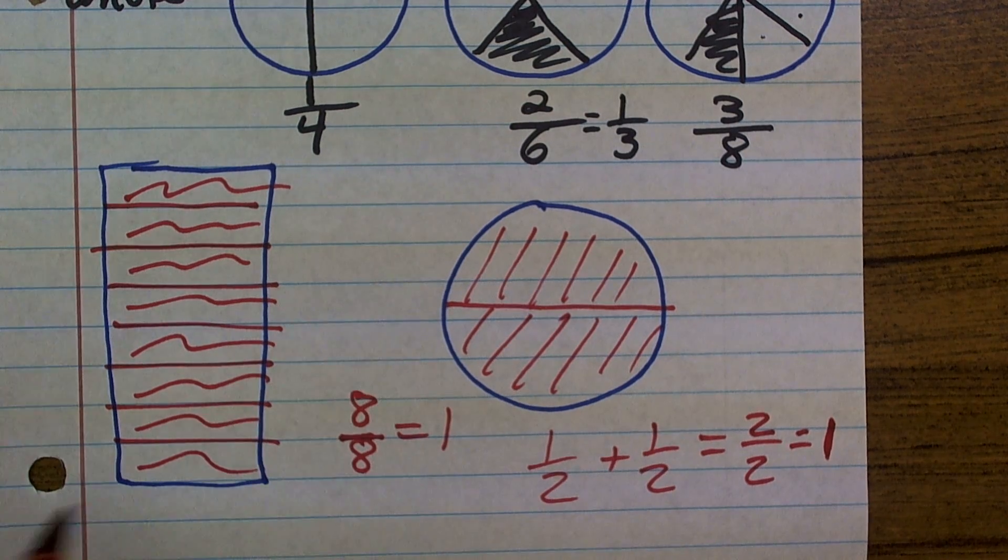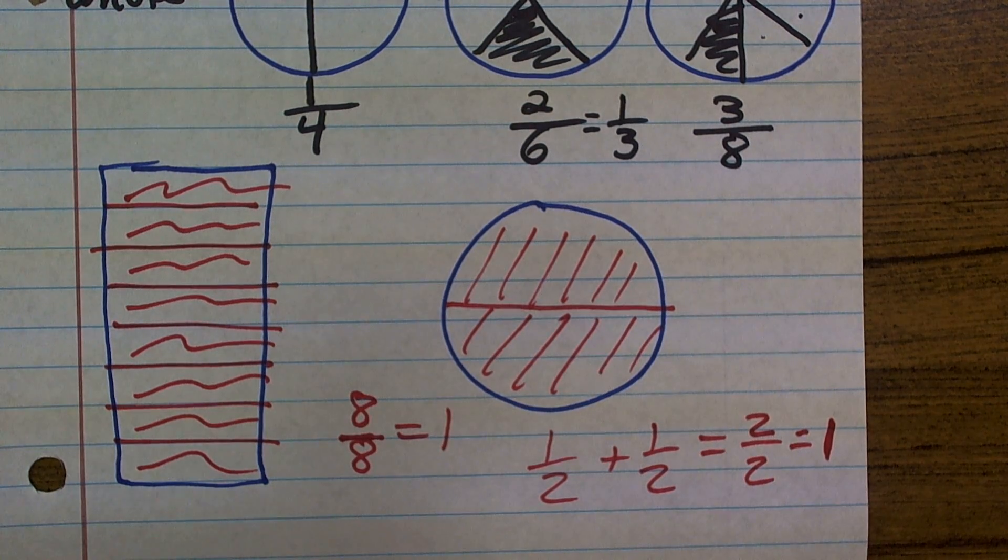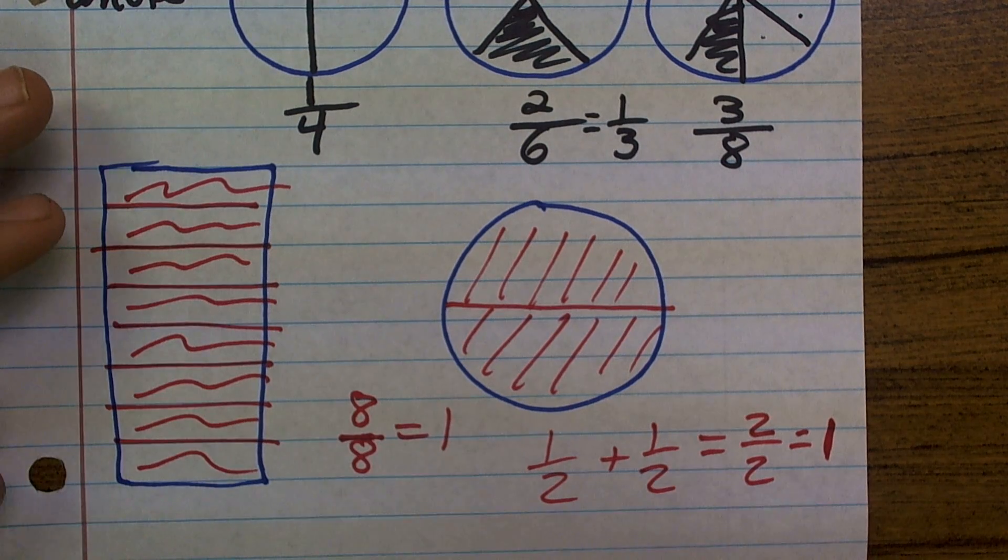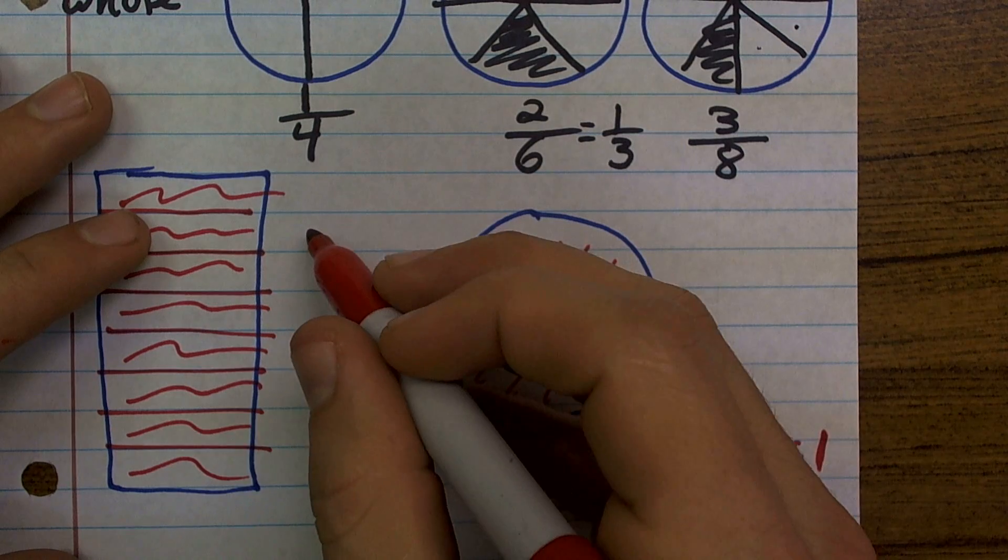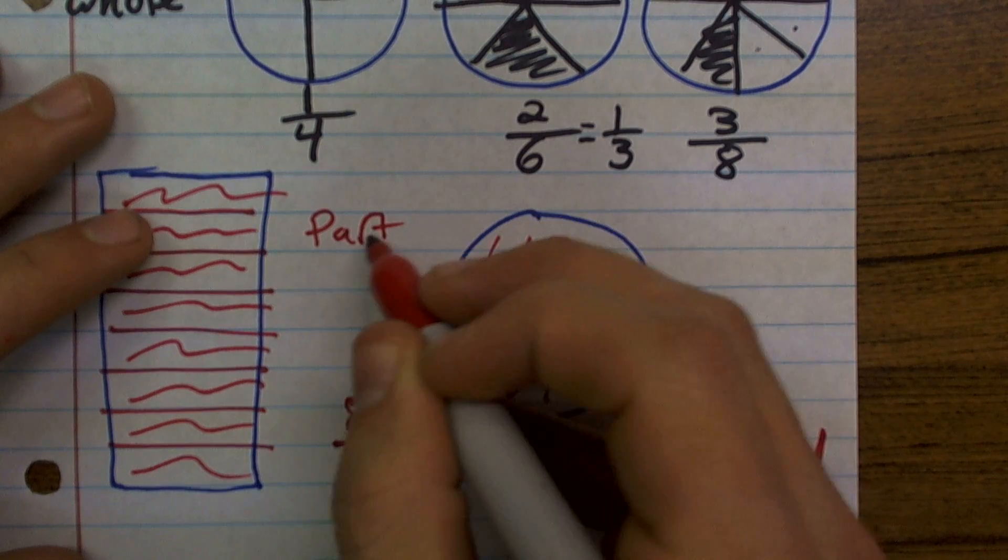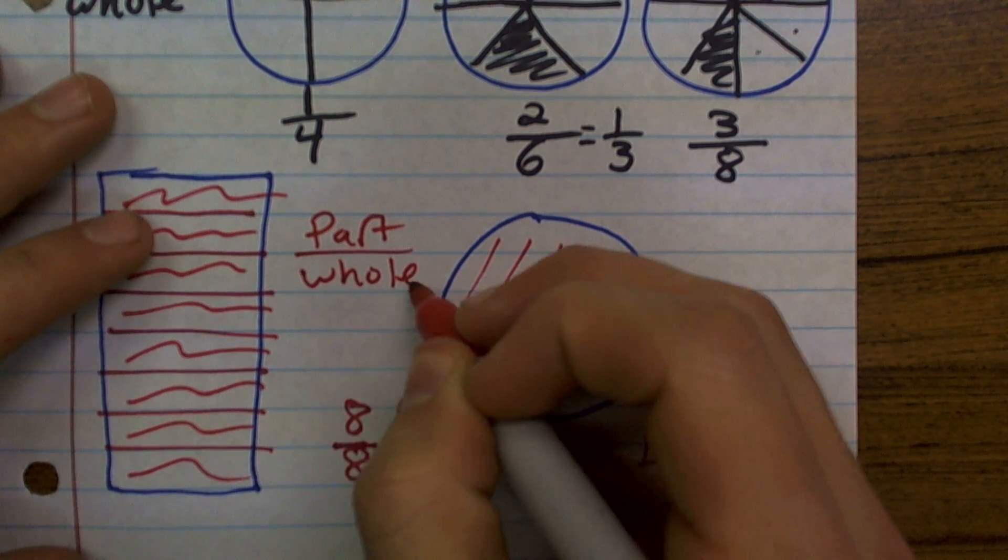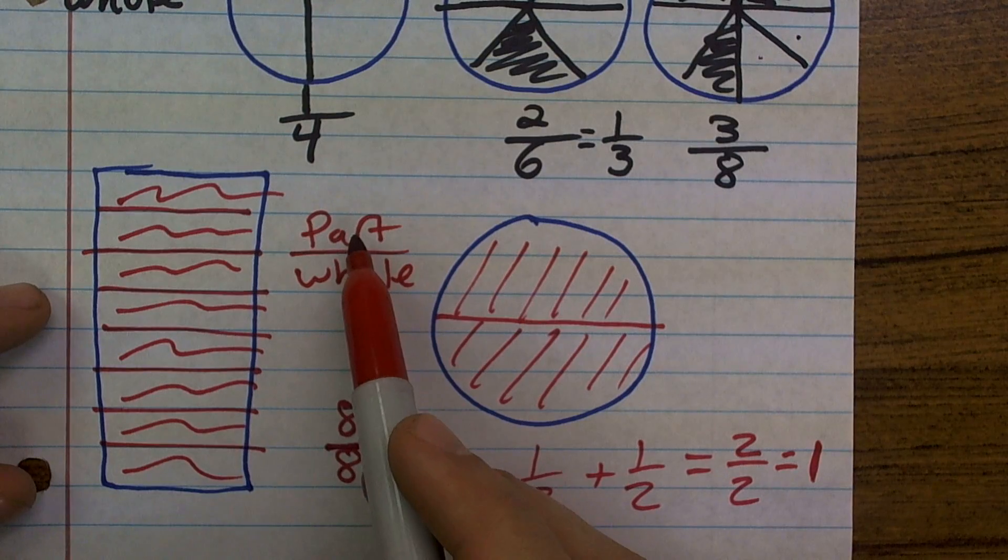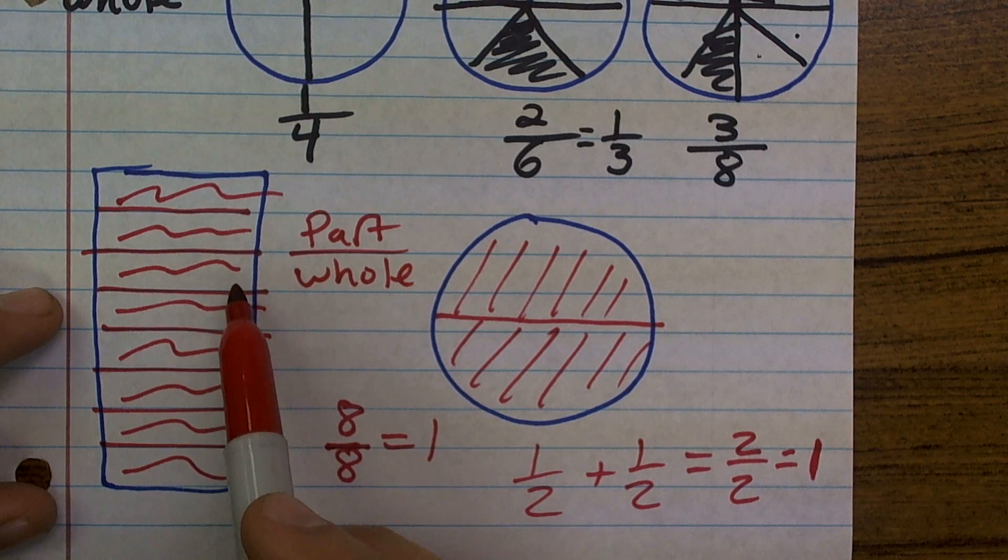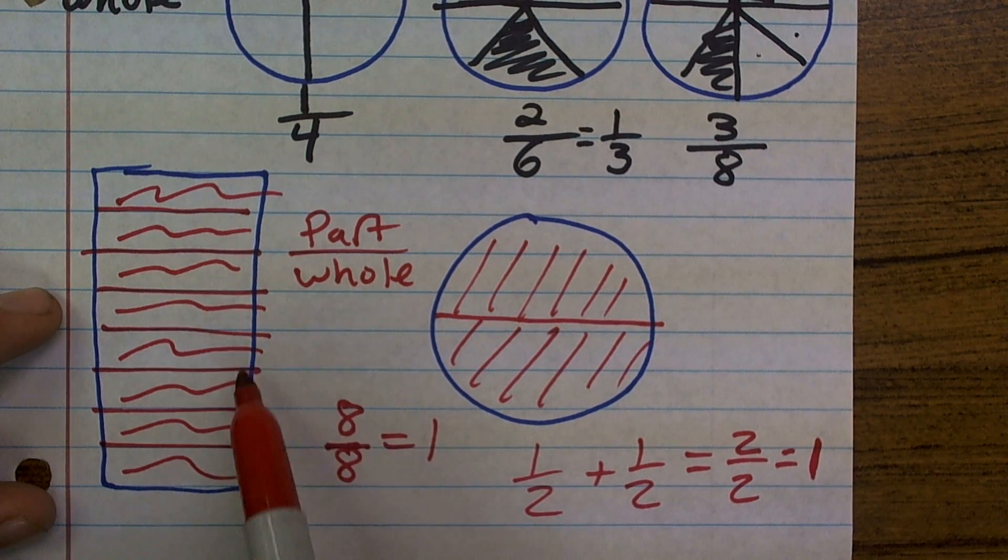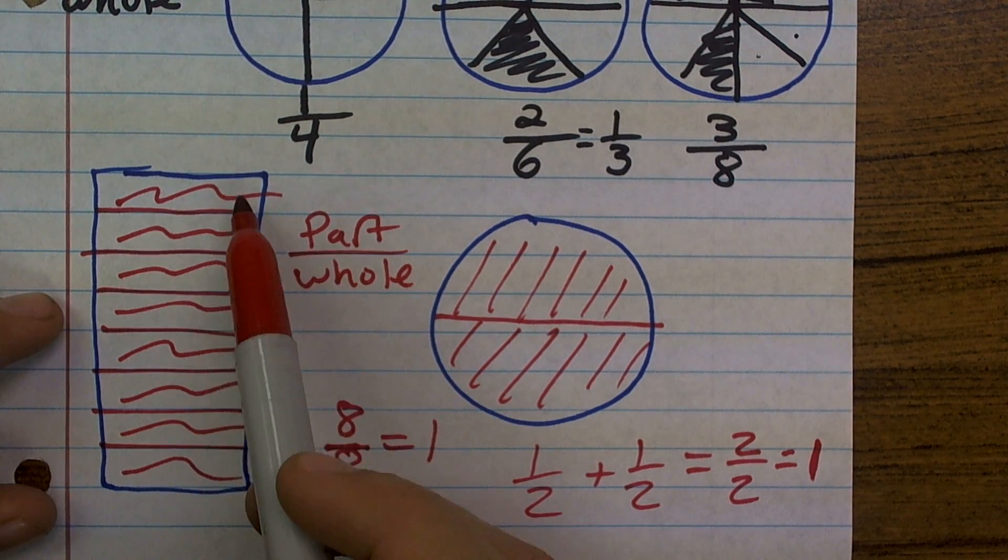So it doesn't really matter if we're dealing with circles or rectangles or really anything that's going to be evenly divided. But the main important thing I want you to get out of this lesson is just remember it's going to be your part over your whole, where part is the number of parts you select, and whole is going to be how evenly your whole is being divided into.